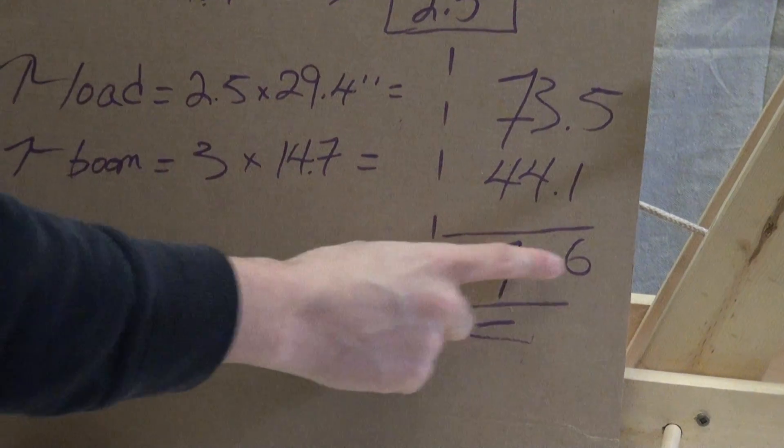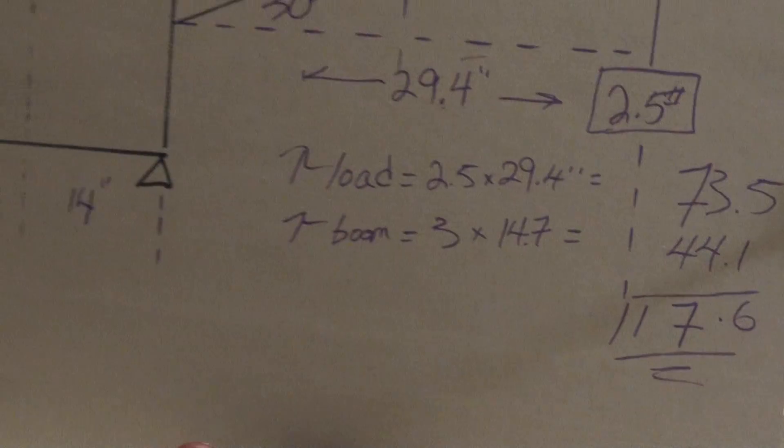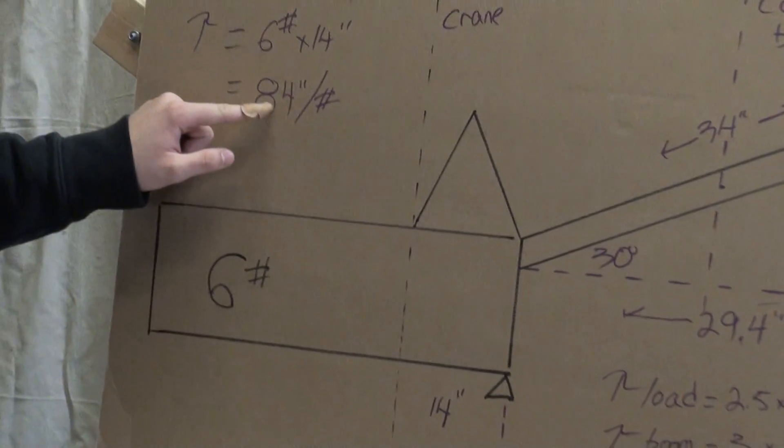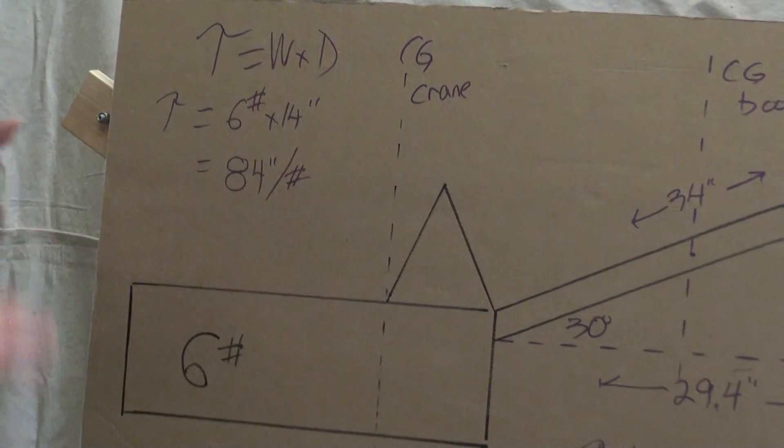Add these two together, we get 117.6 inch pounds of torque, which is greater than our 84 inch pounds of torque on the crane body. So, it tips over.